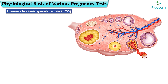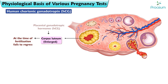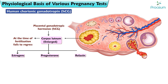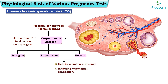Human Chorionic Gonadotropin. In all mammals, the corpus luteum in the ovary, at the time of fertilization, fails to regress and instead enlarges in response to stimulation by gonadotropic hormones secreted by the placenta. The placental gonadotropin in humans is called human chorionic gonadotropin. The enlarged corpus luteum of pregnancy secretes estrogens, progesterone, and relaxin.